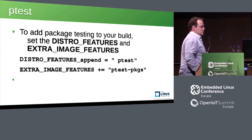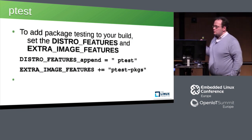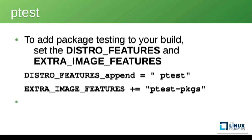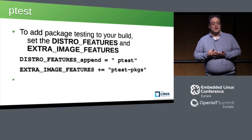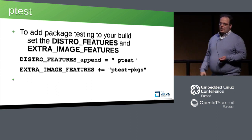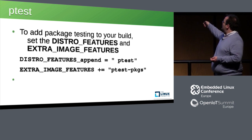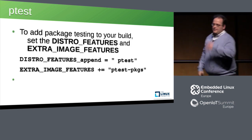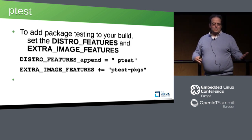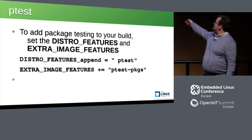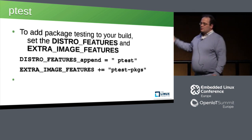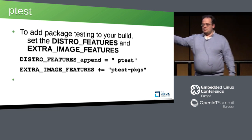How do we use that thing? We need to do two things. First, we enable the p-test machinery during building — that is distro-features-append p-test, which makes sure all the p-test packages are created. The second line makes sure all the p-test packages are installed in our final image. Then I can go ahead and call p-test-runner. Alternatively, if you just want five p-tests of interest, you can install only the sub-packages using image-install plus-equals and then name-minus-ptest.